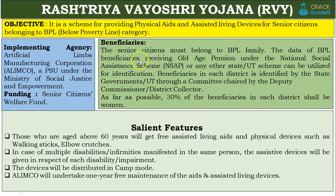The beneficiaries must be senior citizens belonging to BPL families — this is the precondition for this scheme. The beneficiary data will be taken from those receiving pensions under the National Social Assistance Scheme. At the state and UT level, the government will form a committee in each district, chaired by the Deputy Commissioner or District Collector level officer.